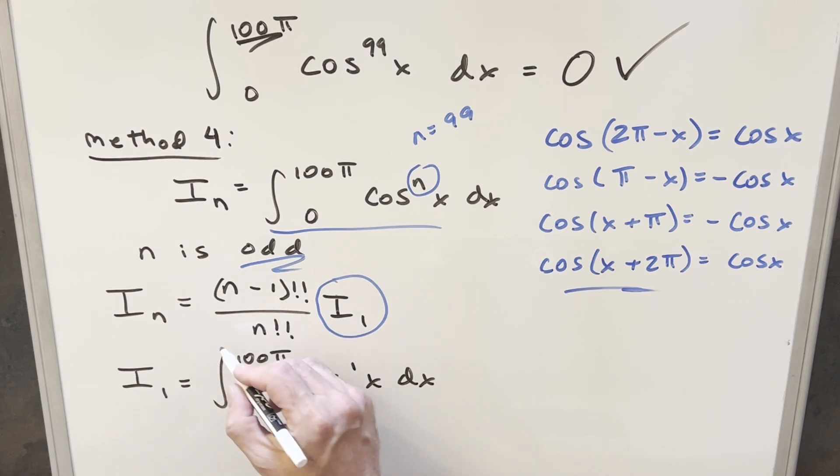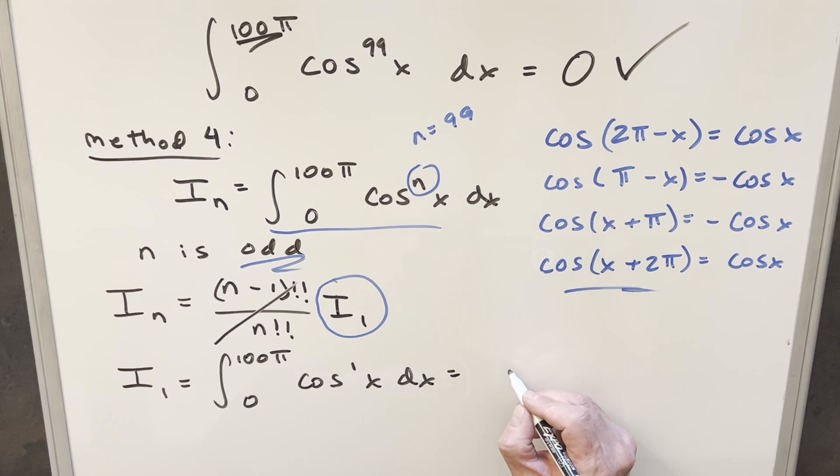But the thing about it is I'm not really going to even worry about this part right here. If we did have to worry about that, then maybe it's a longer method. But really, we can just go to our i sub 1, which is just when the exponent is 1. So we're just integrating cosine. We do this, integrating cosine.